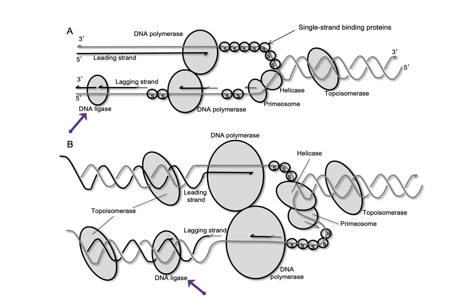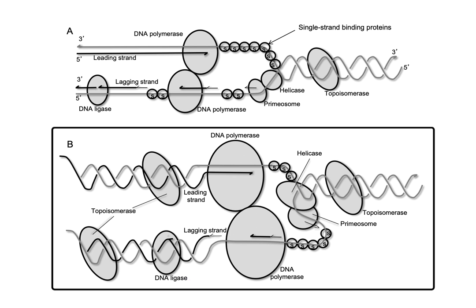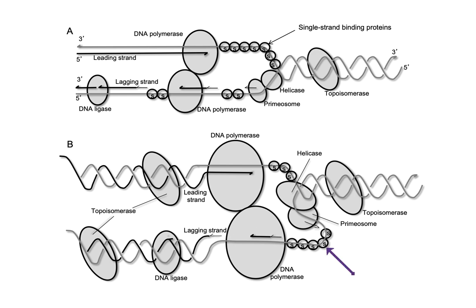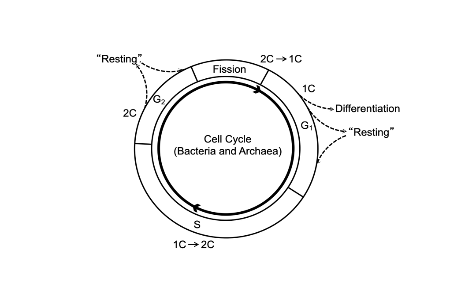Here they are shown in more of a three-dimensional view — you can see they're staying together, and this area is folding out. Once that part is copied, it flips back to the next primosome and starts polymerization there. So it kind of feeds out, pops back in, feeds back out, pops back in — there's a ratcheting effect on that lagging strand.